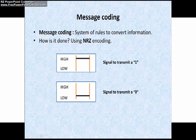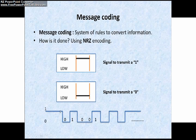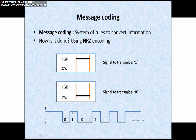In the waveform, the recessive bit is represented as a high level and the dominant bit is represented as a zero level. CAN uses NRZ encoding with bit stuffing after five consecutive bits of the same polarity, which we will see in upcoming slides.